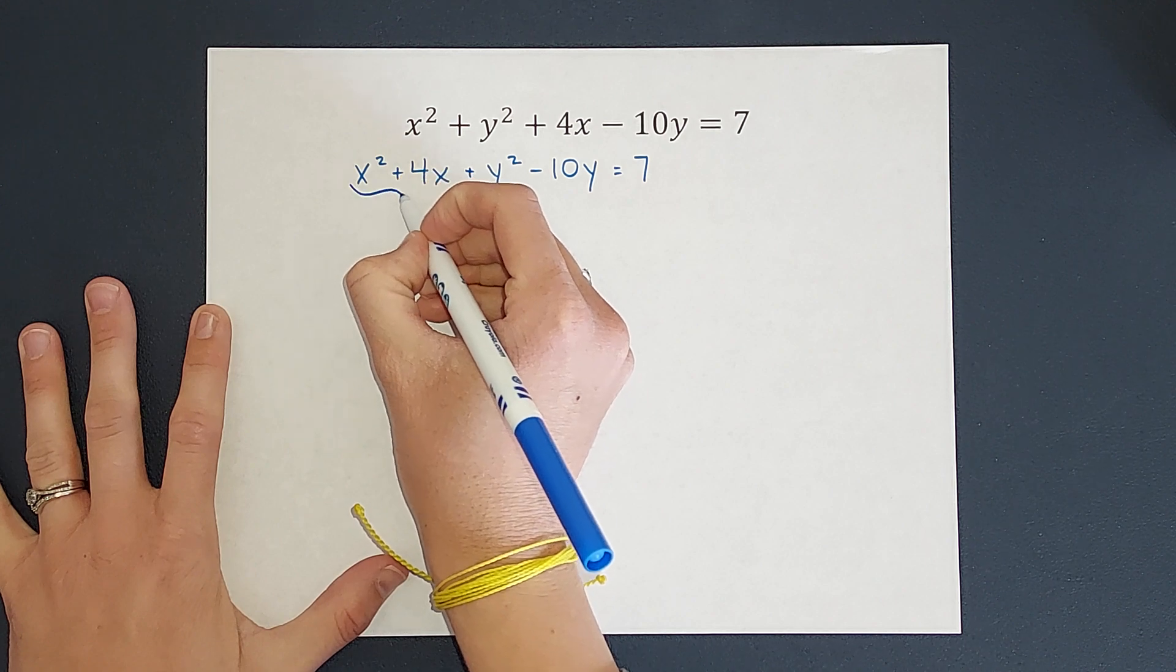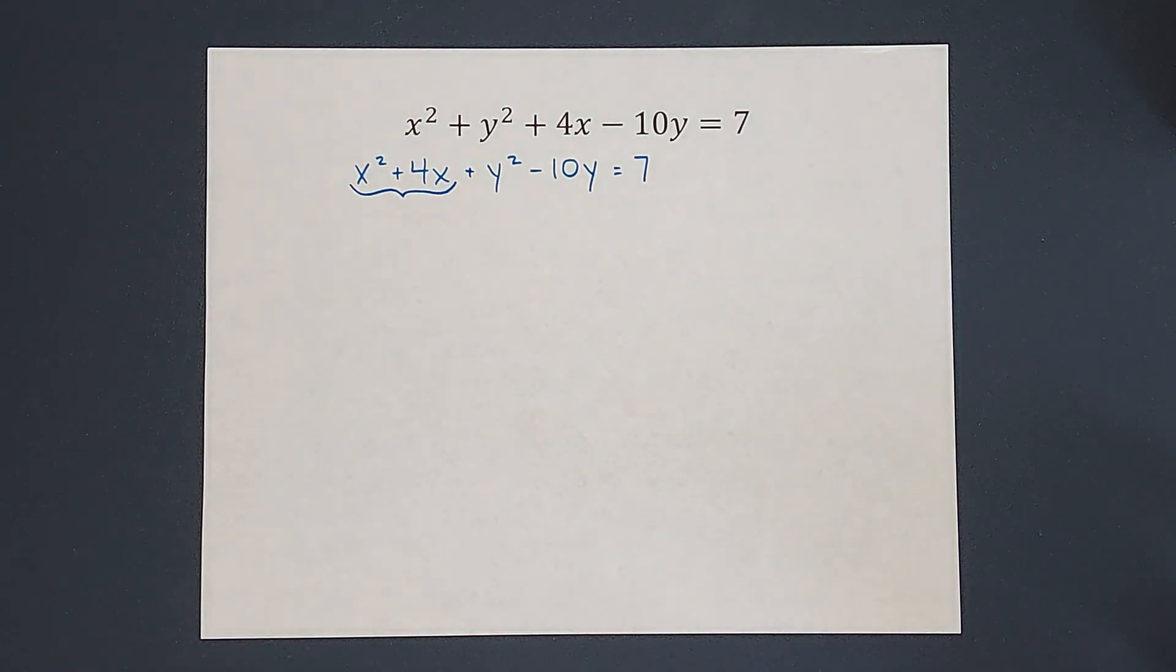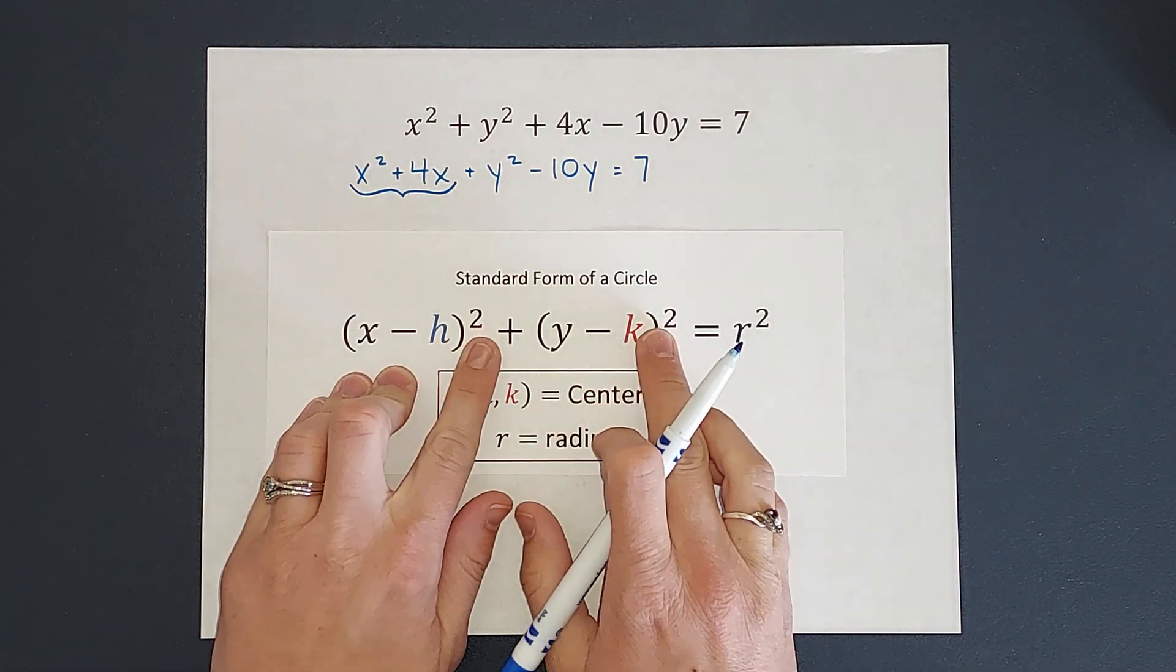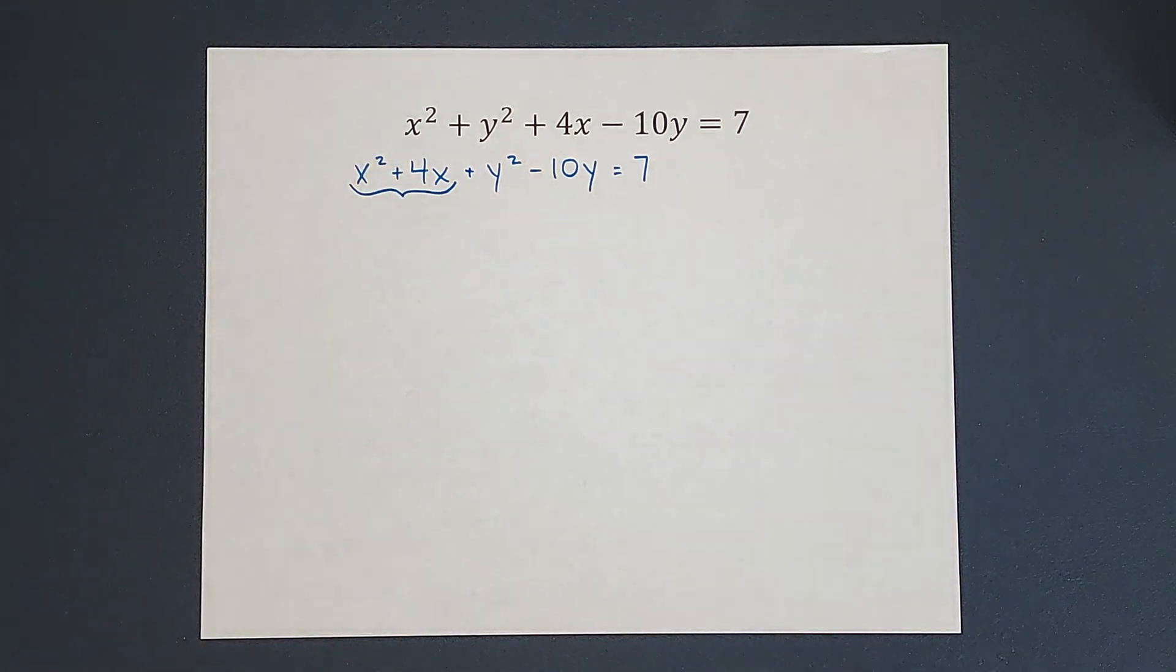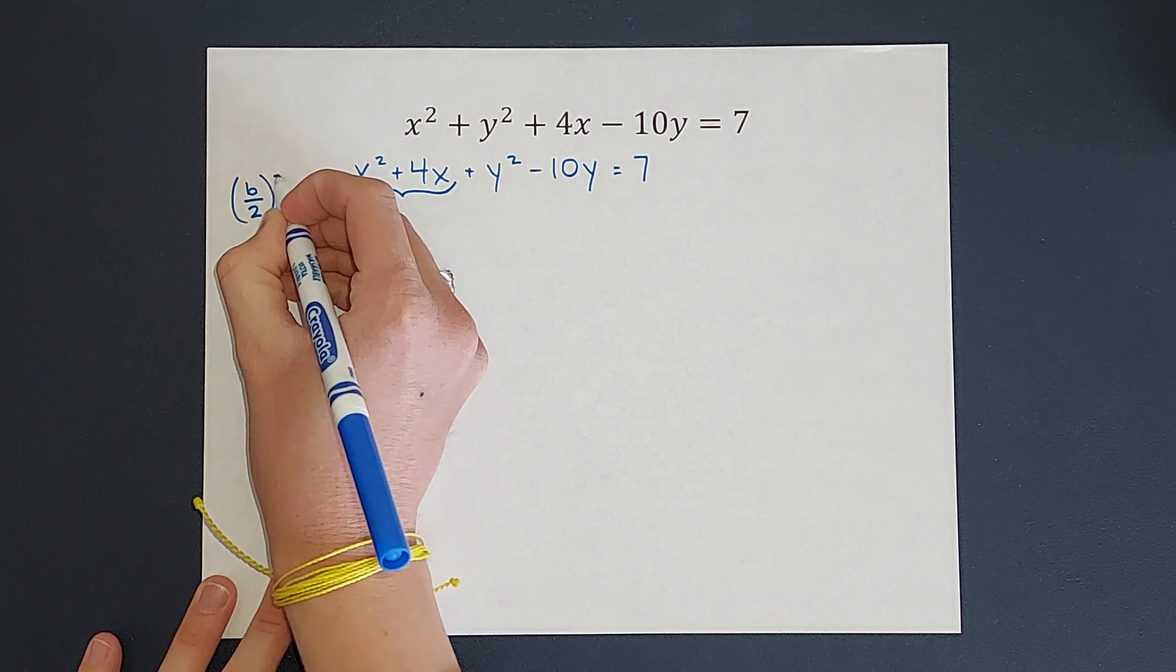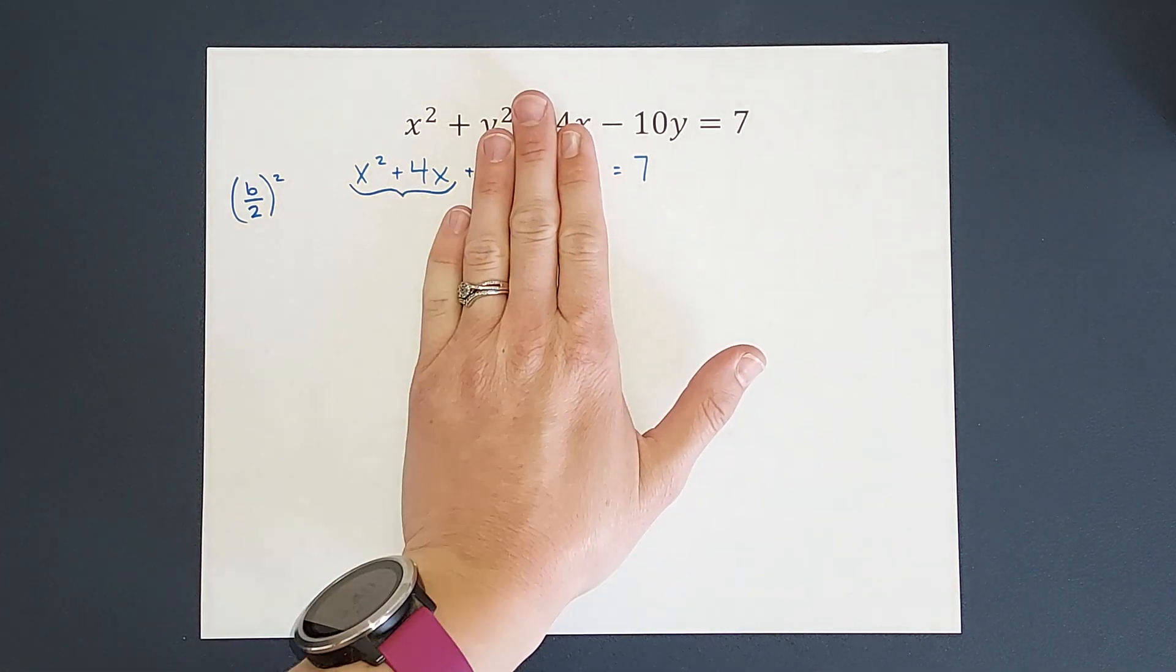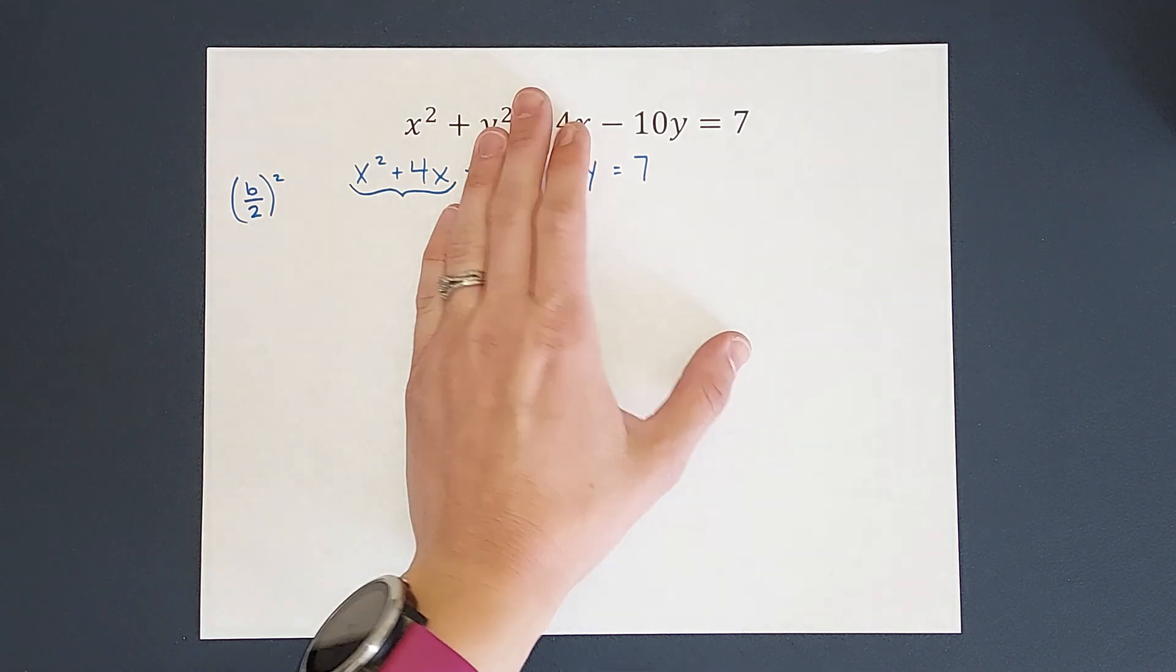My goal, right, to get to a standard form of a circle is I want two parentheses squared. So that is why we are completing the square. So first we're going to focus on the x's. What I do is I take b over 2 and square that. Now, when we're talking about this, we've got the x squared plus 4x. The b I'm referring to is the number in front of the x. So it's 4.